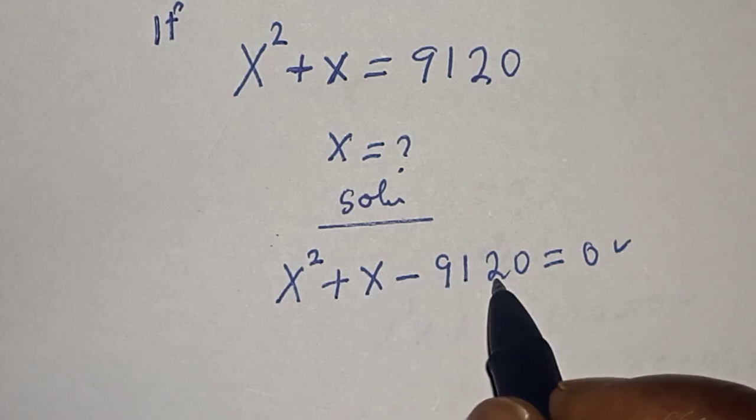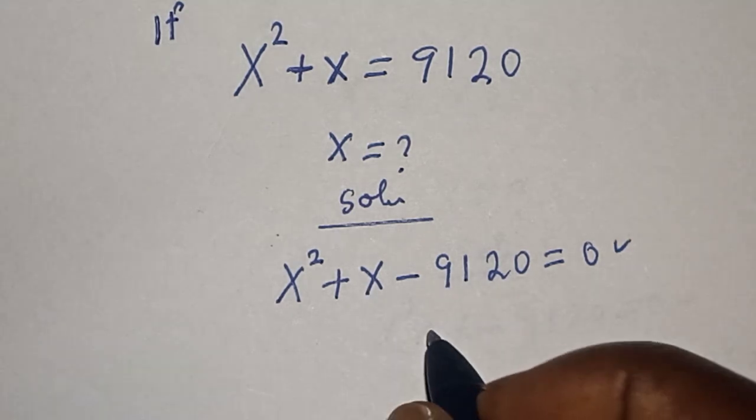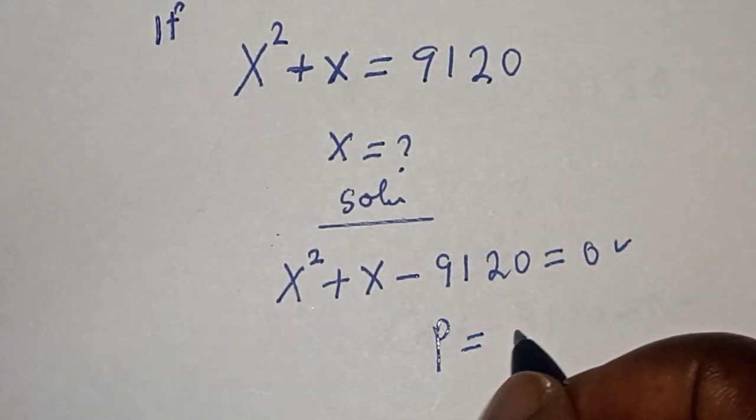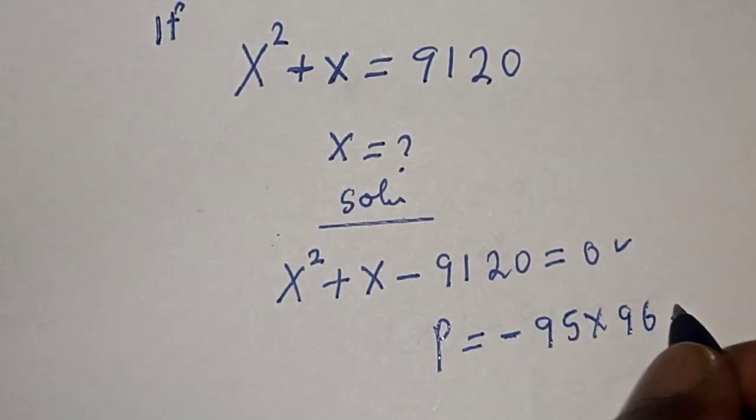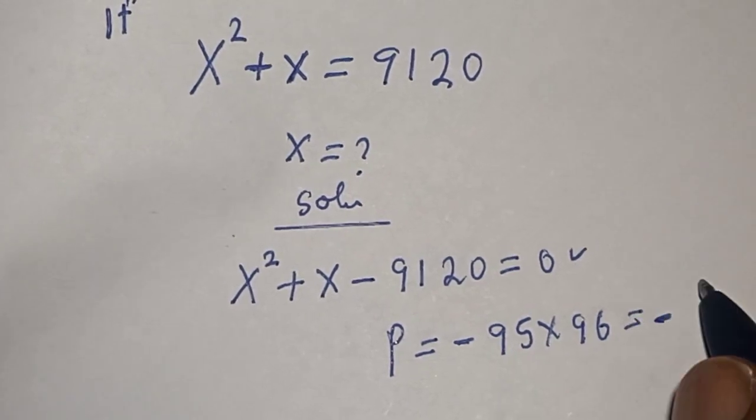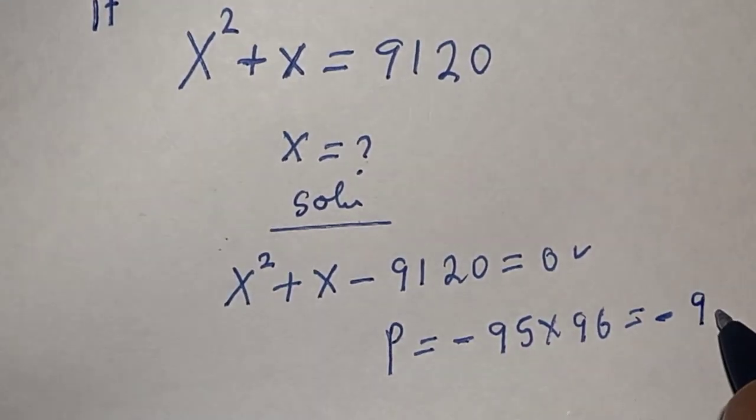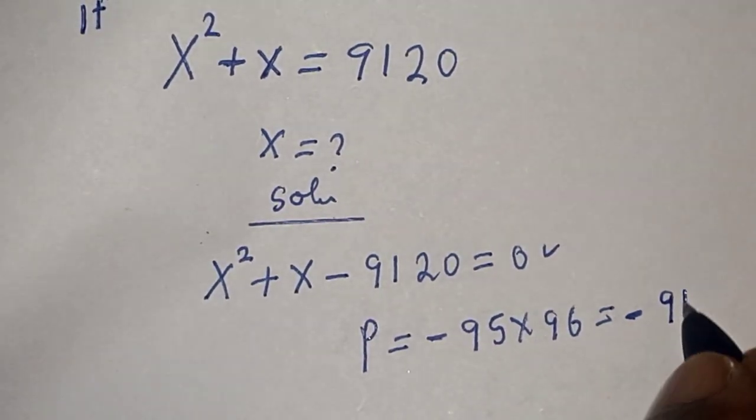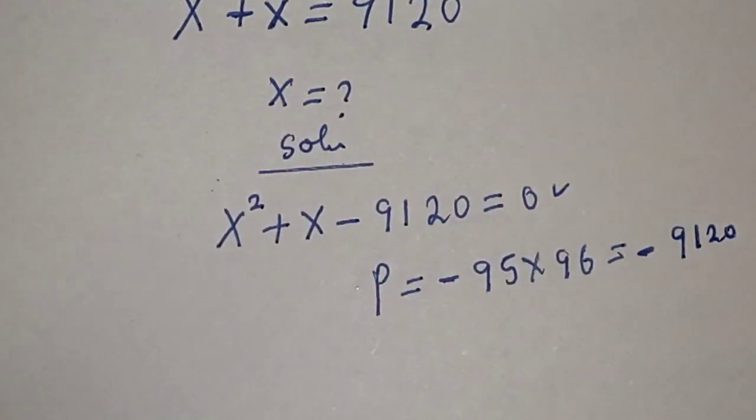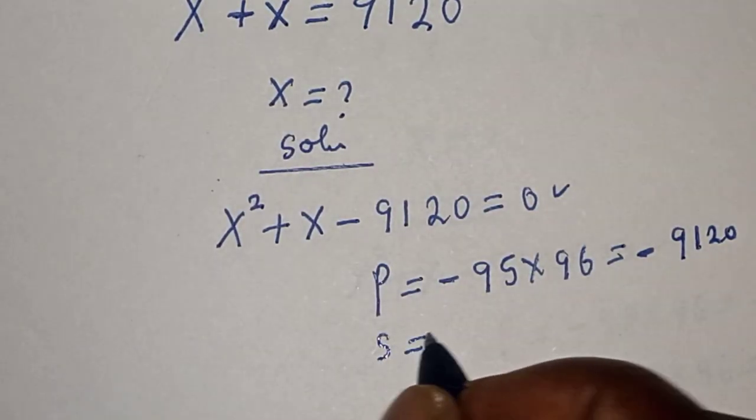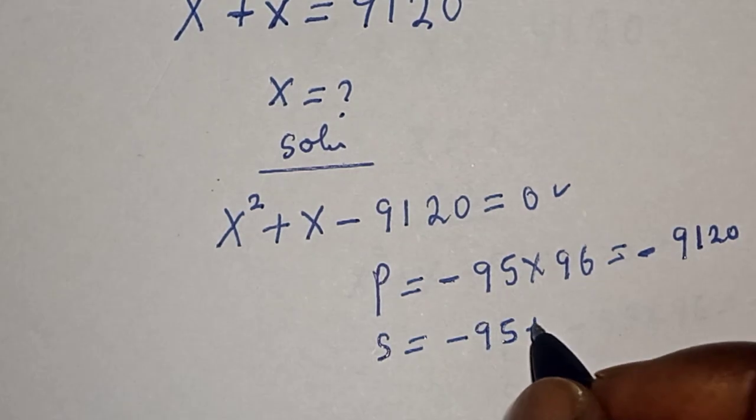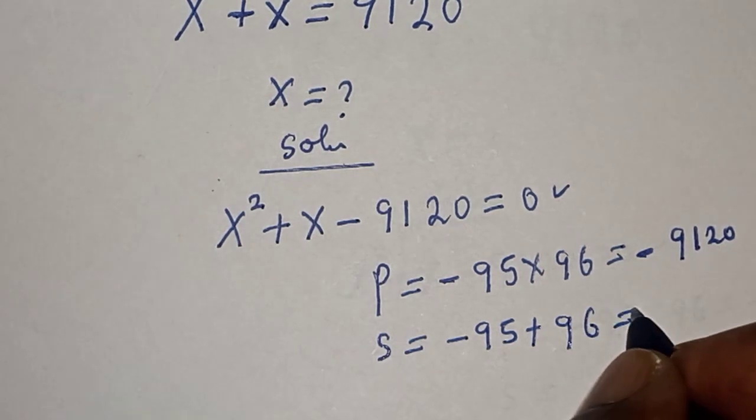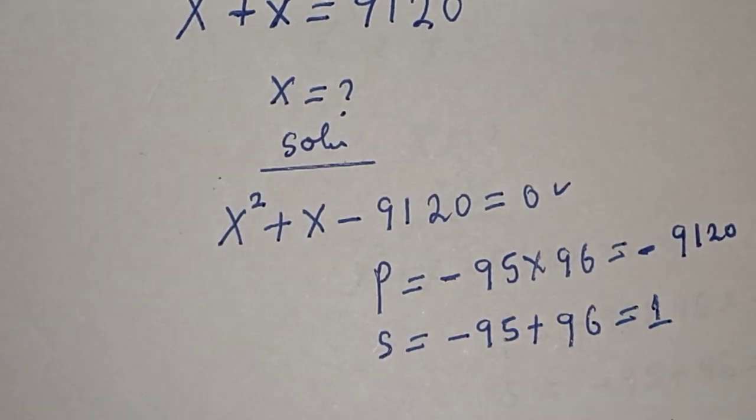Now let's look for the product. Product is equal to minus 95 multiplied by 96, which is equal to minus 9,120. And also sum is equal to minus 95 plus 96, which is equal to 1.